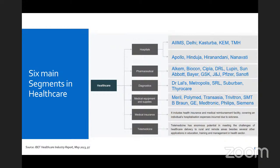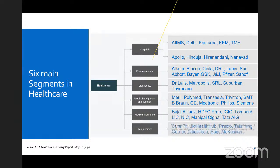The fifth segment is medical insurance. Just like life insurance provides risk coverage for loss of life, medical insurance companies provide risk coverage in case of disease or hospitalization. The last major segment is telemedicine companies, which provide remote healthcare services, especially in rural areas. I have also included a few names of healthcare IT or healthcare product provider companies.